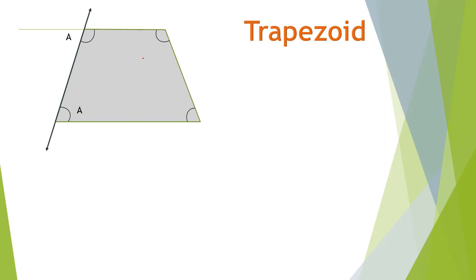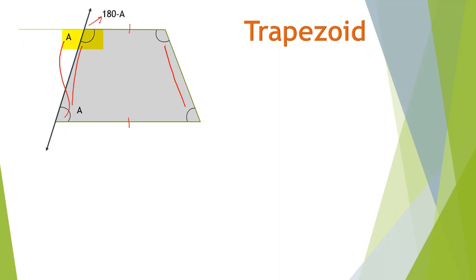This is a trapezoid. A trapezoid has at least one pair of opposite sides parallel. The angles inside a trapezoid follow a rule: co-interior angle pairs are supplementary. These two angles are alternate interior angles and they are congruent, and these two angles are supplementary because they are on a straight line. Therefore these two angles are also supplementary — they both add up to 180 degrees. So trapezoids have pairs of supplementary angles between their parallel sides.